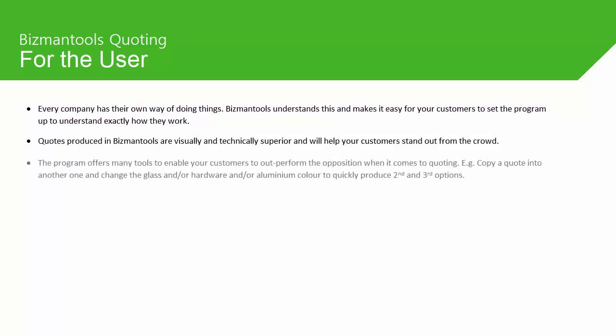The program offers many tools to enable your customers to outperform their position when it comes to quoting. For example, copying a quote into another one and changing things like the glass, hardware and aluminium color to quickly produce second and third options.